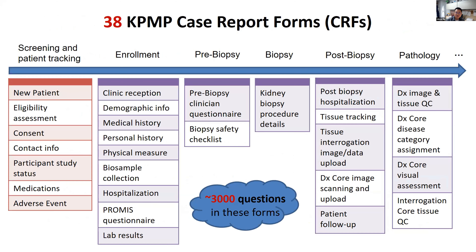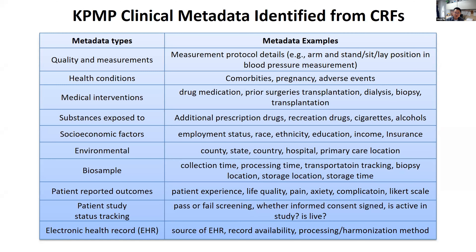In our KPMP, we have 38 CRF case report forms covering about 3,000 questions across all kinds of areas — patient tracking, enrollment, pre-biopsy, biopsy, post-biopsy, pathology, etc. Extracting the concepts and metadata from these forms has been challenging. We have managed to get a lot of metadata and have listed about 10 major metadata types. We are continuously working to get more, because missing a useful variable may affect the outcome of OMICS or imaging studies.